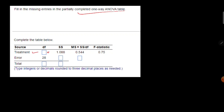We know that the mean sum square is basically sum of squares divided by degree of freedom. The mean sum square of the treatment is 0.544, and the sum of squares of the treatment is 1.088. The degree of freedom is unknown, so we need to solve for it.